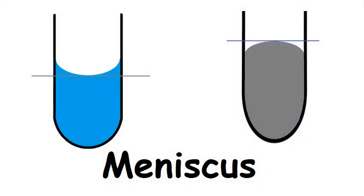An important precaution when measuring liquids, which we have already mentioned, is to keep in mind the meniscus and read from the bottom or the top depending on which type you have.